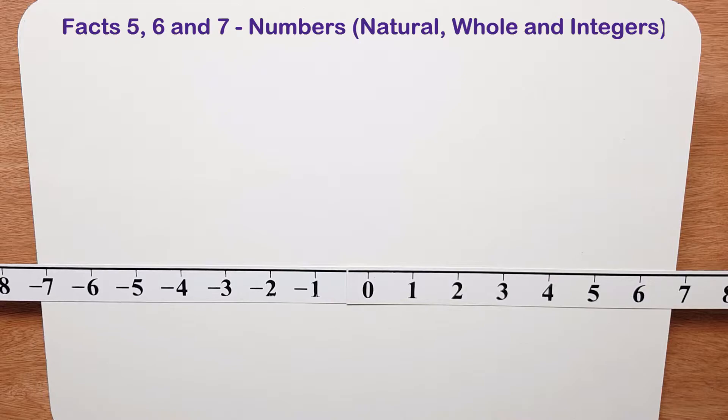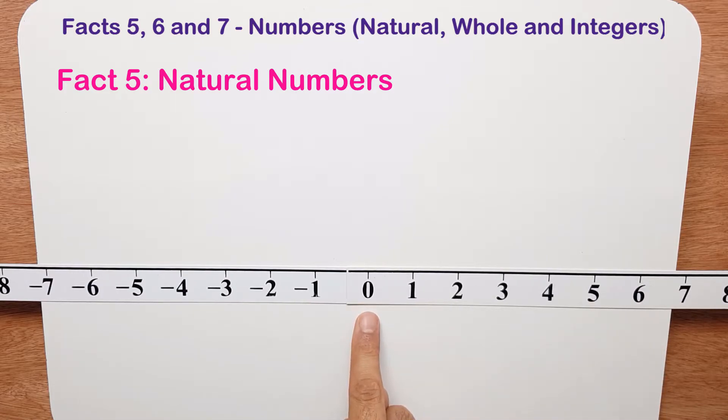In maths fact 5 we're going to look at natural numbers. There's your number line that you're familiar with. There's zero, and all your natural numbers or counting numbers are to the right. So it'll be 1, 2, 3, 4, 5, 6 and so on.